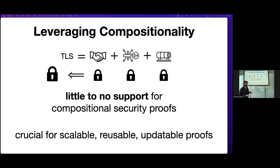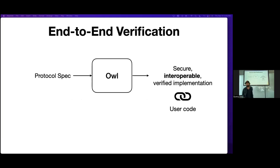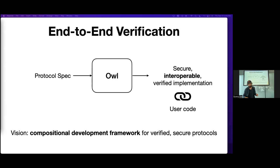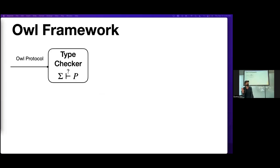To support compositionality and realistic protocol verification, our vision is to enable a new paradigm for end-to-end verification. Using our tool, which we call OWL, developers can encode the protocol's specification and receive low-level efficient implementations that are guaranteed to be secure, implemented correctly, and interoperable — both with unverified versions of the same protocol and with other pieces of user code that want to plug into these verified protocols. OWL is intended to be more of a development framework that ties everything together and eliminates any source of gap between specification, verification, and implementation.